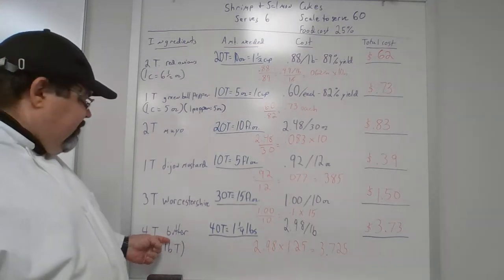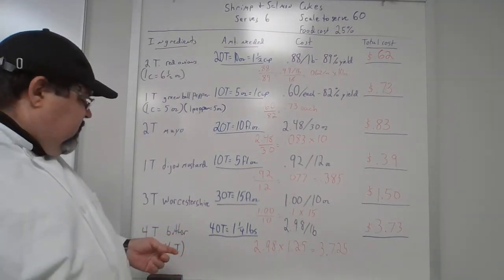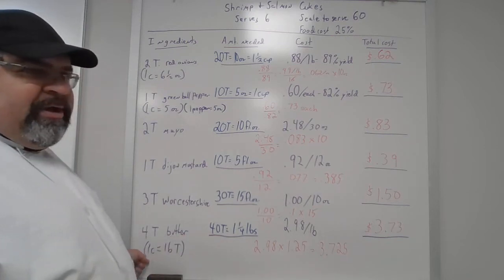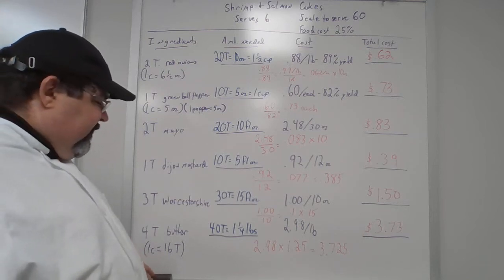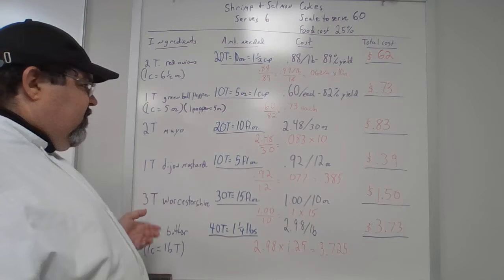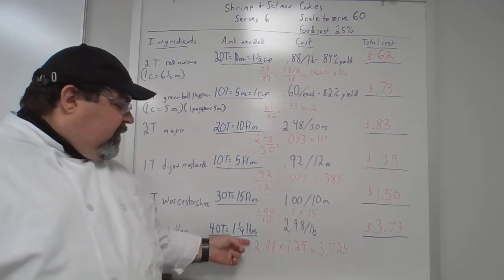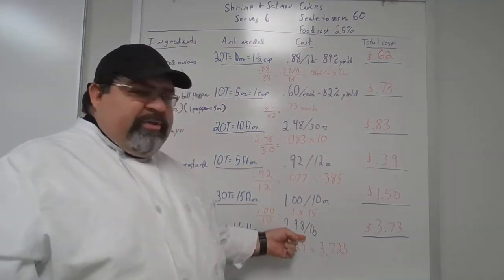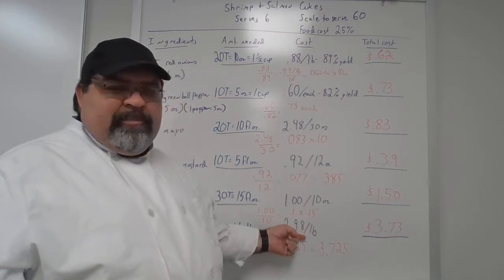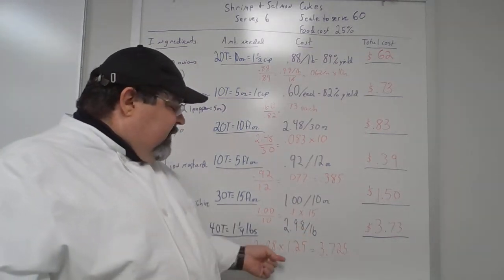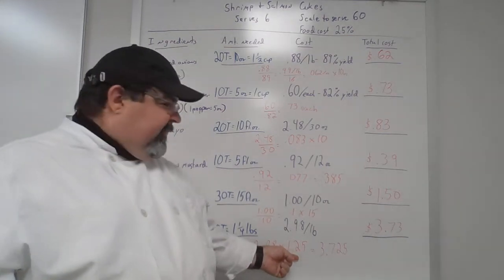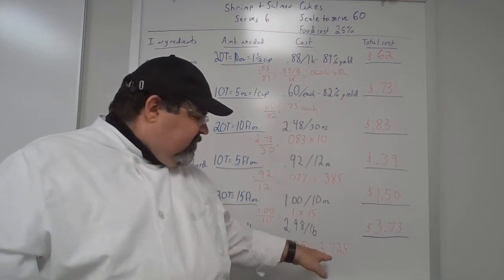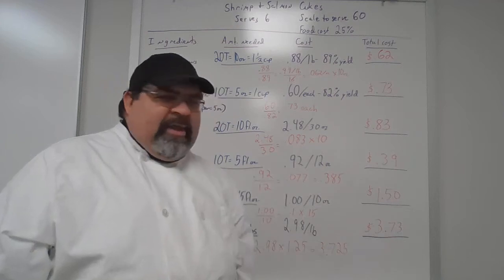Four tablespoons of butter, multiplied by 10, gives you 40 tablespoons of butter. One cup of butter is 16 tablespoons, so figuring that out, you're going to need one and a quarter pounds of butter. According to the shopping app, butter is $2.98 per pound. $2.98 times 1.25 pounds gives you $3.725 — rounded up to $3.73.